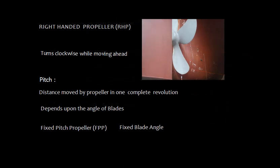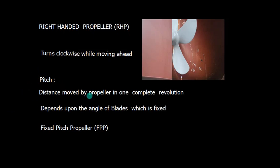Now let us talk about the right-handed propeller, or RHP. As per convention, the right-handed propeller turns clockwise while moving ahead. There is a term called pitch, which is the distance moved by the propeller in one complete revolution. This pitch depends upon the angle of the blades, which is fixed for a fixed-pitch propeller, FPP.